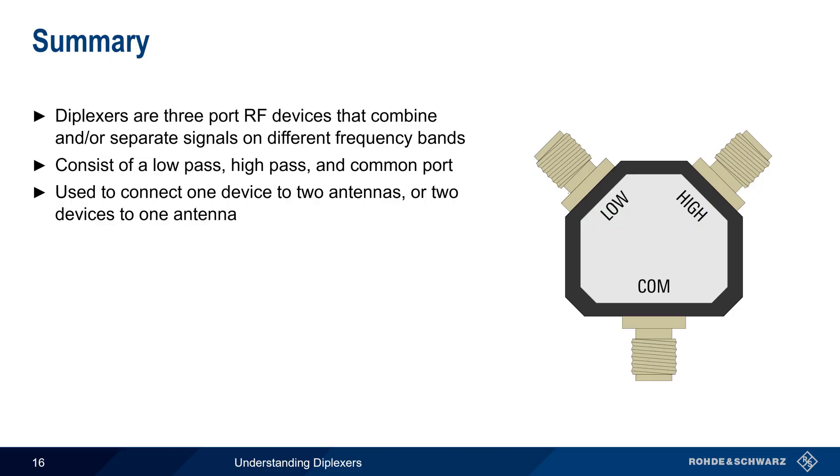Diplexers are most often used either to connect one device to two antennas or two devices to a single antenna. Measuring or characterizing diplexers can be done using a vector network analyzer or the combination of a spectrum analyzer and tracking generator.